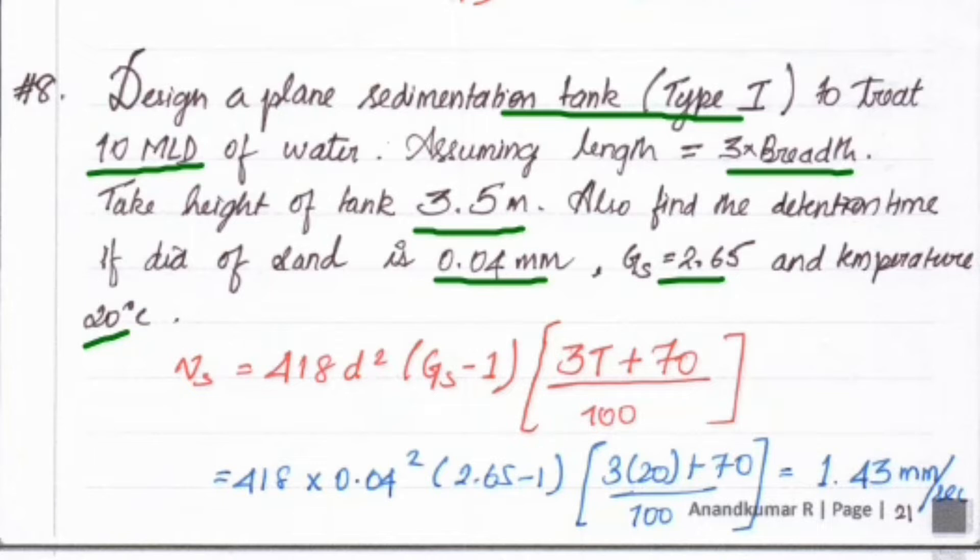From that we have to find the retention time and the dimension of the plain sedimentation tank. First we find the settling velocity Vs using the formula: 418 d² (Gs - 1) [3T + 70]/100.